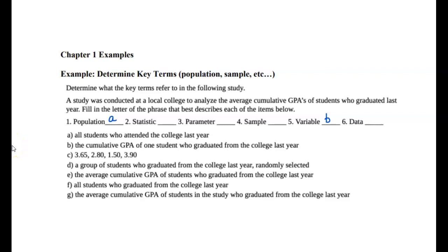Part C: 3.65, 2.8, 1.5, 3.90. These are examples of GPAs — the numbers you collected when you went and asked students what their GPA was, or looked it up. This is the raw data. So C is the data in your study.